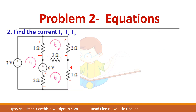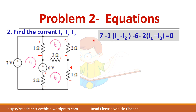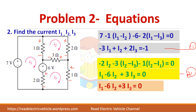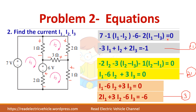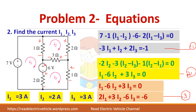Let us see the second problem. This problem is also already solved in the previous Kirchhoff's Law video. We have already seen how to write the equations. You have three loops and you will get three equations with three variables. You have to find the currents I1, I2, and I3. By solving these three equations you will get the currents. Now let us apply Cramer's Rule to this circuit and find I1, I2, and I3.